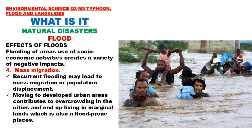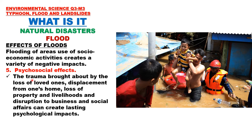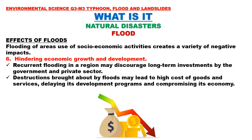Number four: mass migration. Recurrent flooding may lead to mass migration or population displacement. People leave flooded areas and move to developed urban areas, contributing to overcrowding in cities, often ending up in marginal lands that are also flood-prone. Number five: psychosocial effects. Trauma from loss of loved ones, displacement from home, loss of property and livelihoods, and disruption to business and social affairs can create lasting psychological impacts.